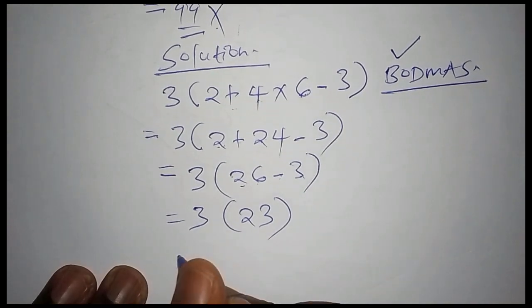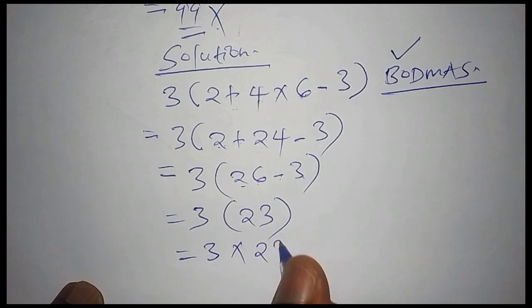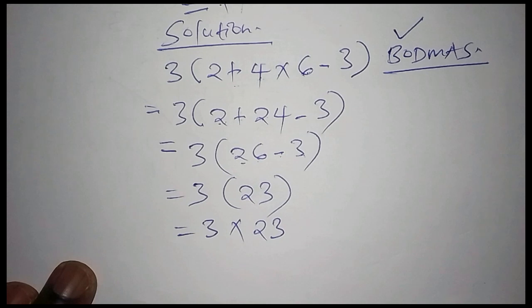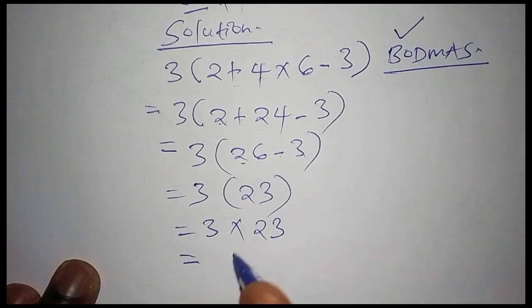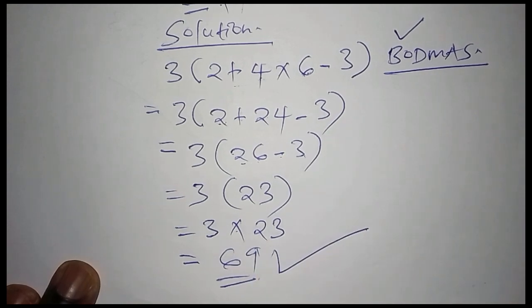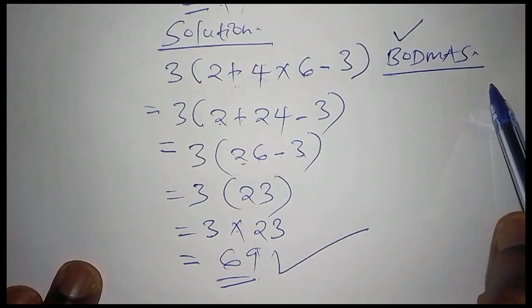So for us to open the bracket now, we shall have this 3 multiply by 23. When you multiply it by 23, it means that now we've opened the bracket. Then now our final answer now comes: 3 multiplied by 23, we have our answer as 69. So 69 now becomes the correct answer simply because we follow the correct order of operations.